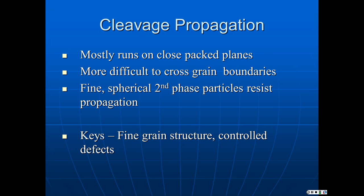Propagation of cleavage cracks mostly runs on close-packed planes. Because of that, as cracks cross grain boundaries, they must reorient — the crack has to turn to line up on close-packed planes in the neighboring grain, and that costs energy. So the more grains you have to cross, the more resistant the material is to cleavage propagation. Small, spherical second phase particles also help resist propagation. To resist cleavage, you want a fine grain structure and controlled defect populations. Total elimination of defects is not possible in most materials at any reasonable cost, so you try to make sure they're not the wrong kind.